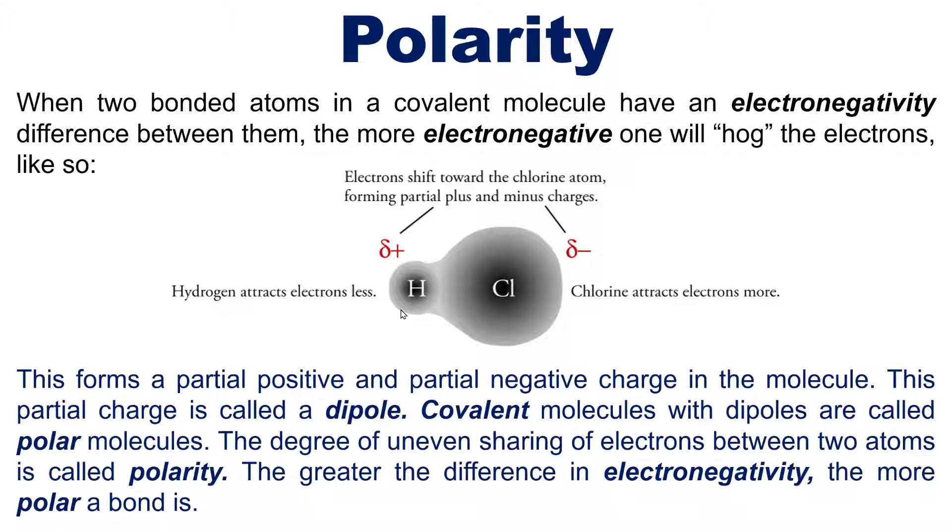Now, covalent molecules with dipoles are called polar molecules. The degree of uneven sharing of electrons between two atoms is called polarity. So polarity really is an uneven sharing of electrons. The greater the difference in electronegativity, the more polar the bond is.